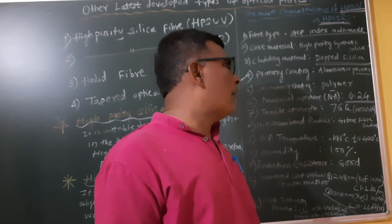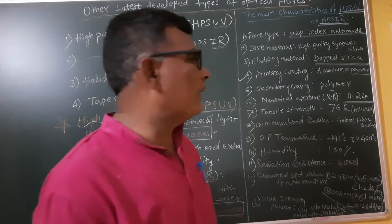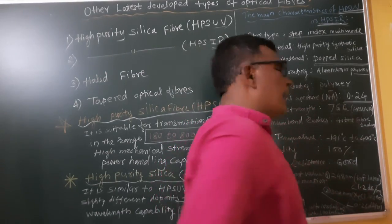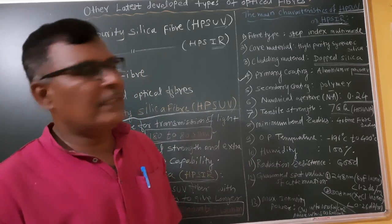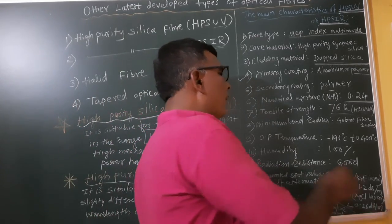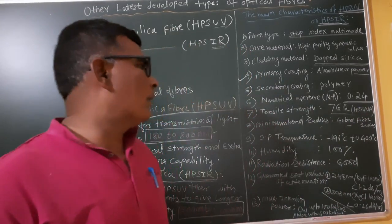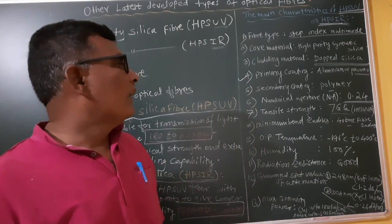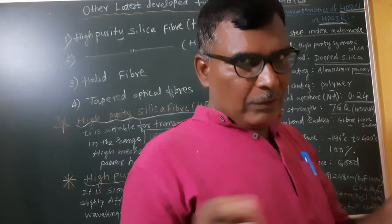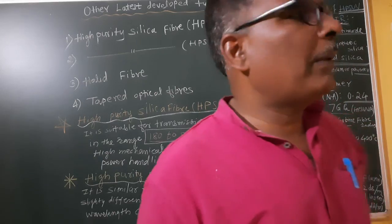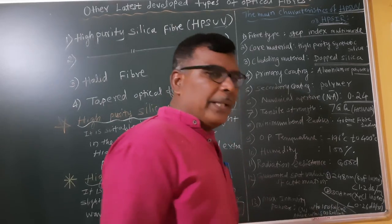The numerical aperture for HPSUV or HPSIR is 0.24. The tensile strength is 7 gigapascals. The minimum bend radius is 40 times the fiber radius — remember this condition. The minimum bend radius for HPSIR is 40 times the fiber radius.